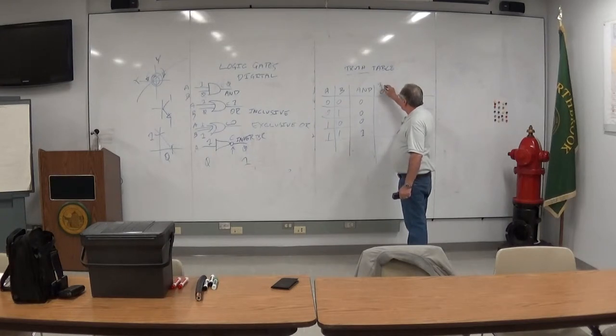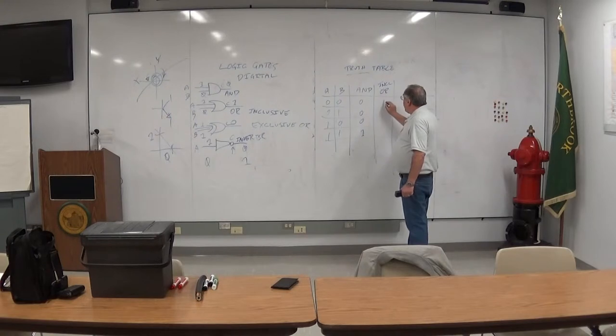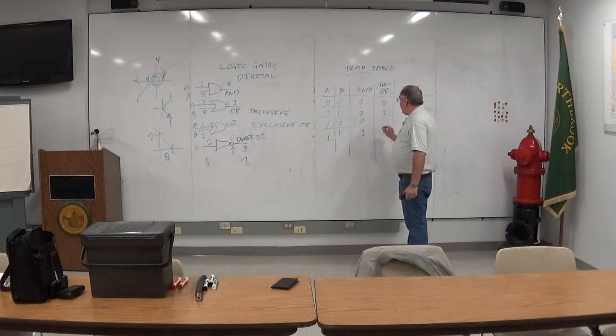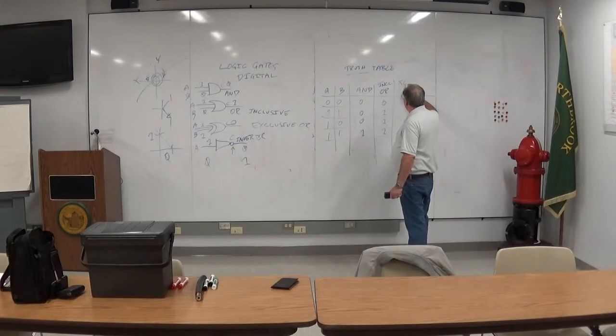OR, I'm talking about the inclusive one. If both are zero, you get a zero. If either is a one, you get a one. If both are a one, you get a one. But if it's an exclusive OR, sometimes it's called an XOR.